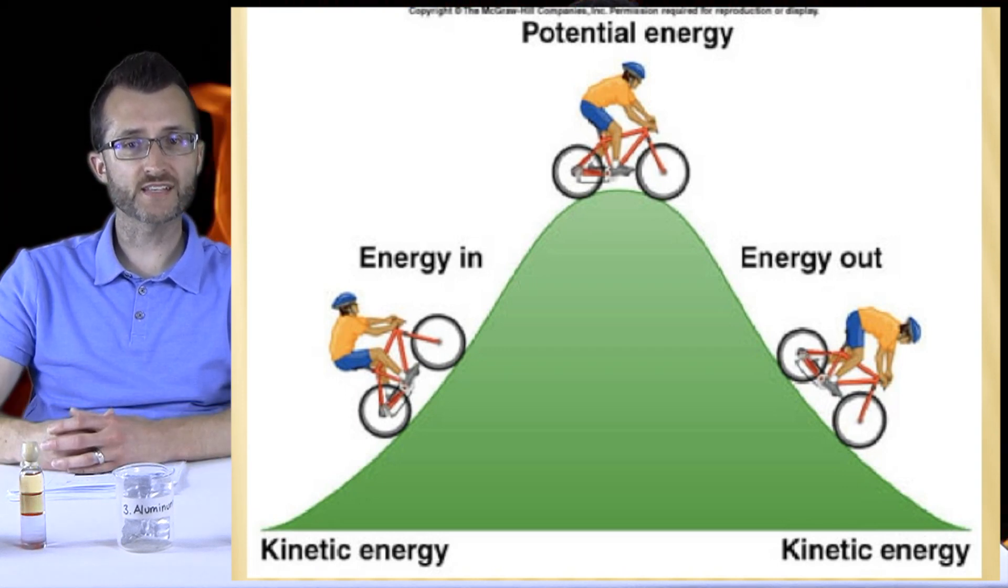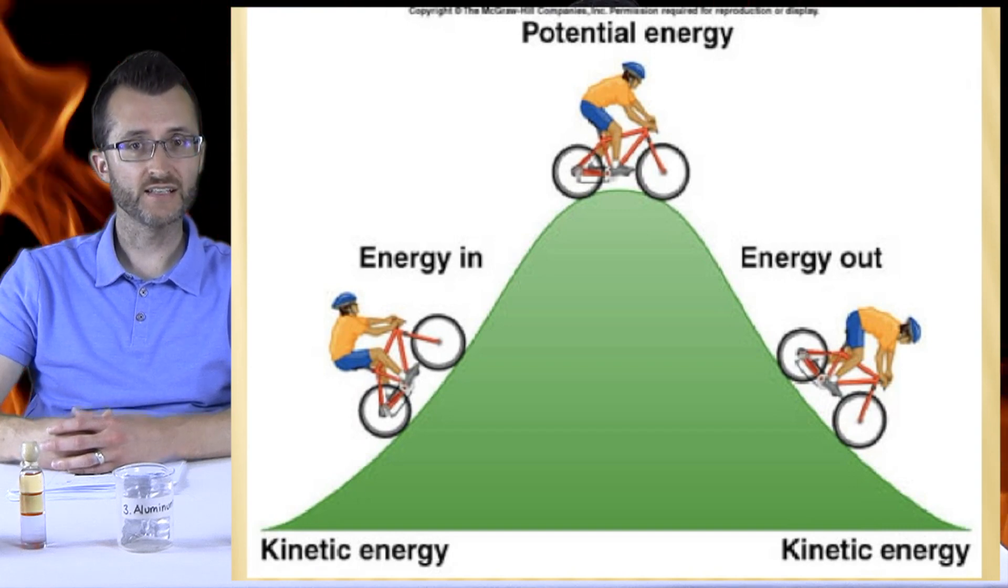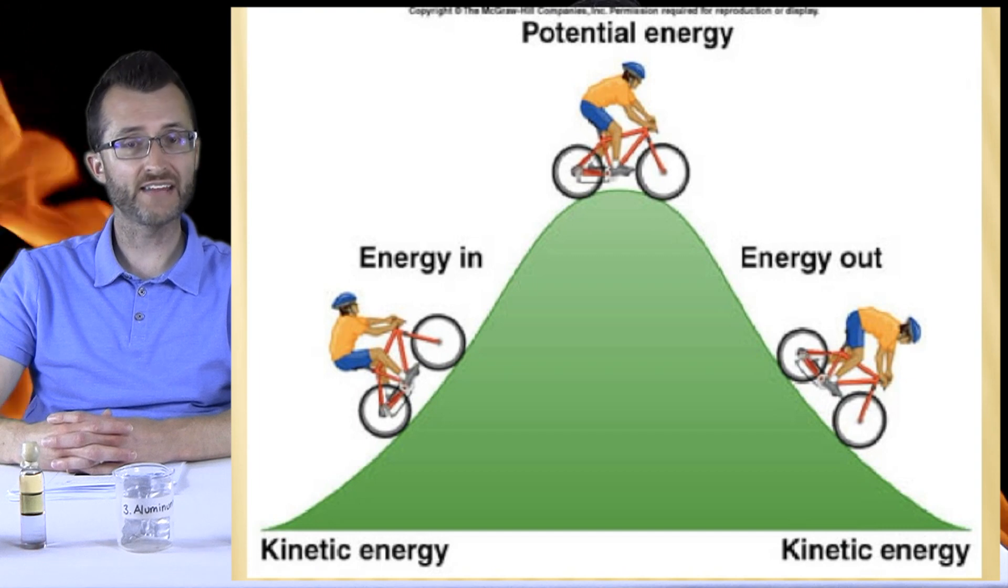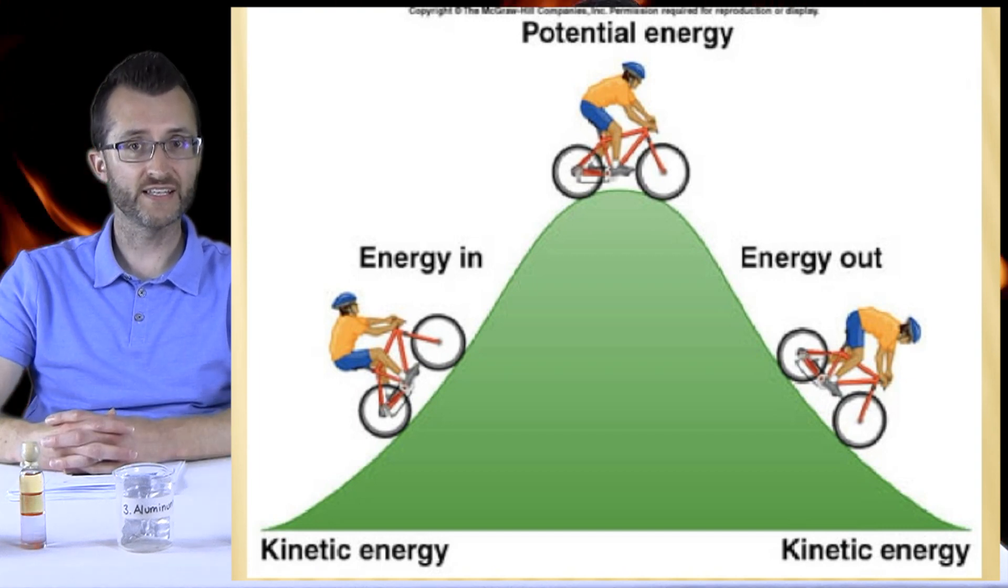At the top of the hill, the cyclist has potential energy. That potential energy is then converted into kinetic energy and the energy is released as the cyclist goes down the hill.